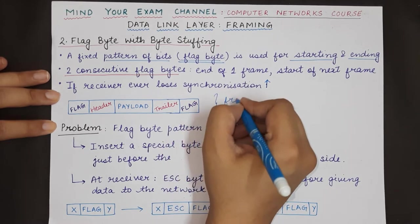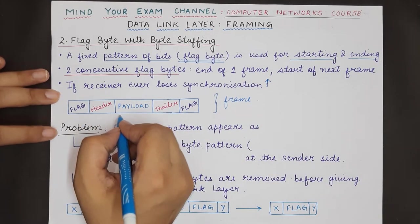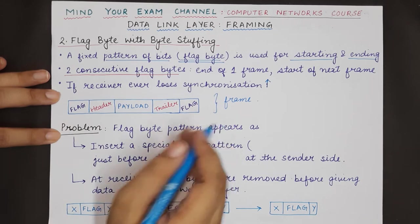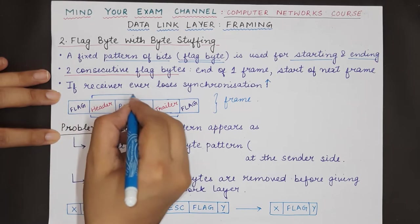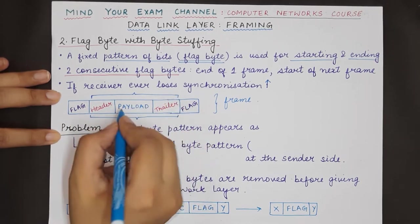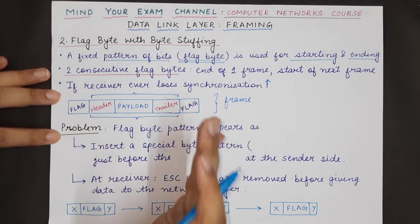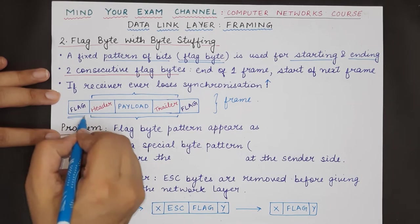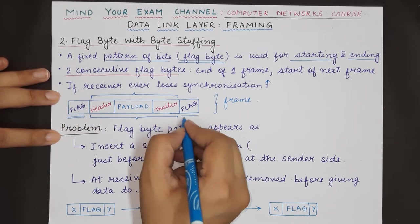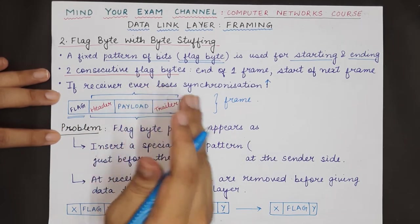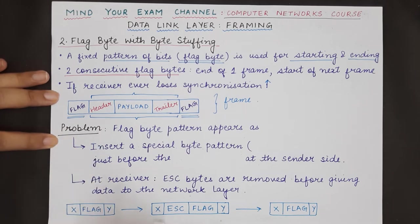When the flag byte with byte stuffing technique is used, a frame has five different fields. The actual frame consists of the header, the payload which contains a network packet, and the trailer. To tell the receiver that a new frame is starting, a flag byte is added at the beginning, and to tell the receiver that the frame is ending, a flag byte is added at the end.